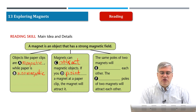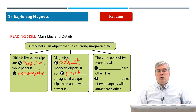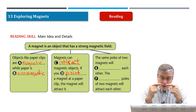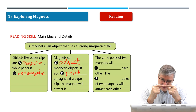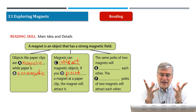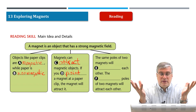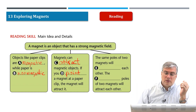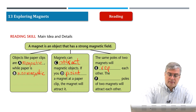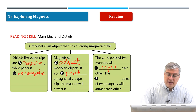The same poles of two magnets will repel each other. If you have the south pole of one magnet and the south pole of another magnet and push them together, it's really hard — they won't stick together. If you stop applying force, they'll fly apart. So the same poles of two magnets will repel each other.